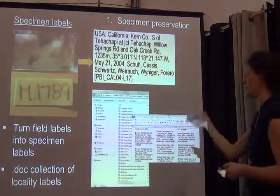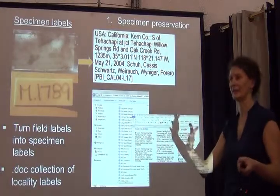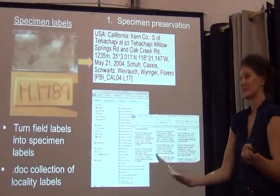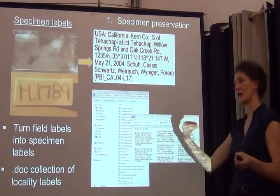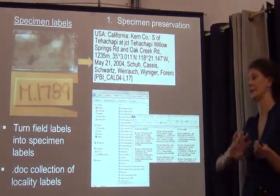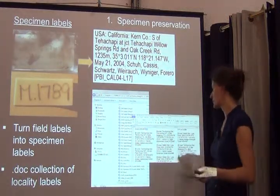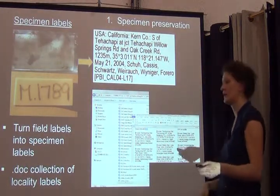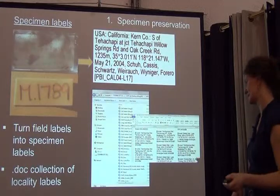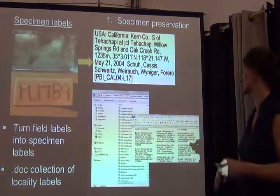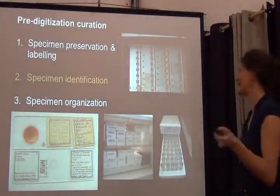Typically we have what I call a 'duck collection' of locality labels — it could be an Excel spreadsheet or output directly from your database. We put our field localities and collection dates into the database before we even process specimens and print labels directly from it. A simple Excel spreadsheet also works really well: you type up all collections, store that in a safe place, and share it with colleagues. Very useful and important — it just helps with overall data entry.